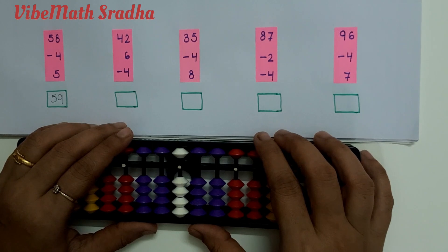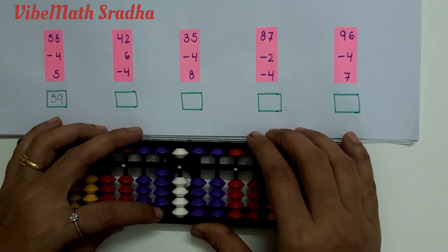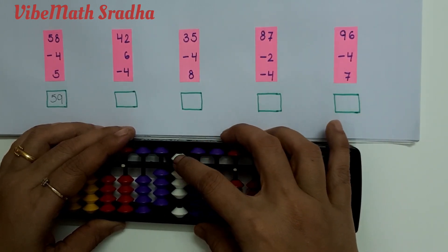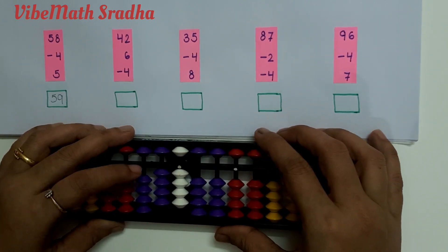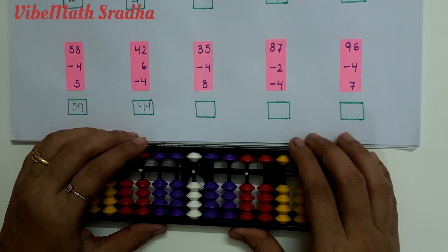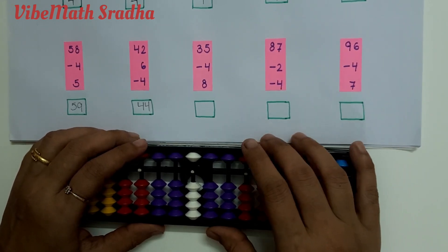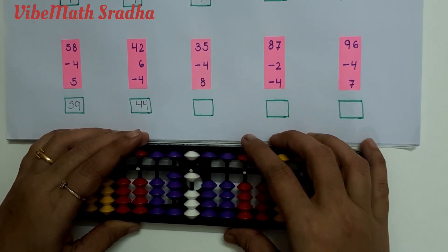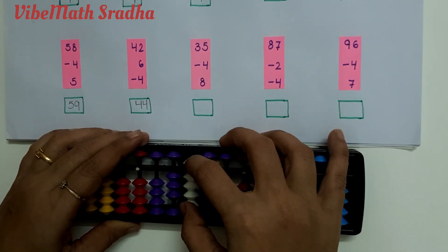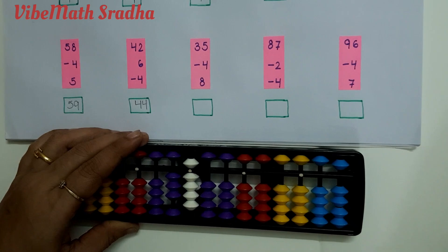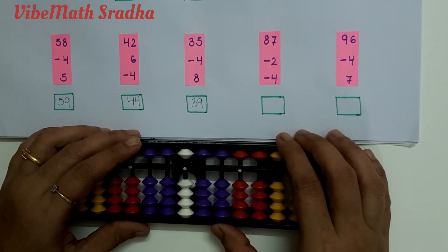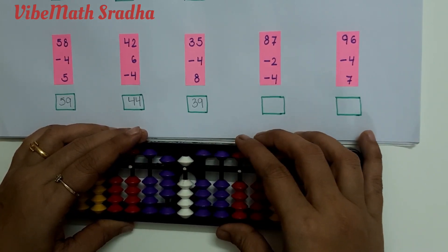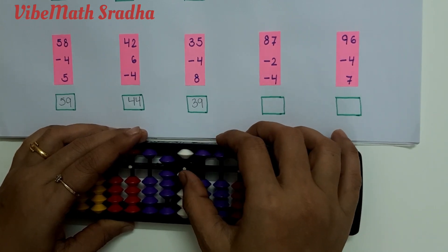The next example is 42 plus 6 minus 4. 42 plus 6 minus 4, applying minus 5 plus 1, answer is 44. Next example is 35 minus 4 plus 8. 35 minus 4 is minus 5 plus 1, plus 8. Answer is 39. The ninth example is 87 minus 2 minus 4. 87 minus 2 minus 4, applying minus 5 plus 1, answer is 81.